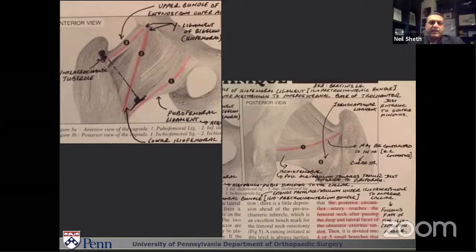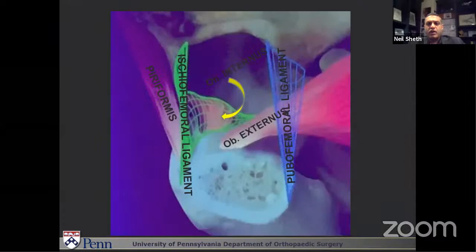Following that, he also has a diagram showing all of the ligaments and small rotators and where they attach. Again, the orientation is just different — I'm used to seeing it from the other side of the hip. So I had to basically switch my brain 90 degrees from what I was used to seeing.